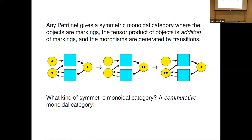In a symmetric monoidal category you can tensor things. Tensoring the objects is just adding markings. The plus sign in a chemical reaction network like C + 2H₂O — that plus is the symmetric monoidal structure, adding markings to get a new marking. But the kind of symmetric monoidal category we get here is much more strict — it's a commutative monoidal category, where all the commutativity, associativity, and unit laws are actual equations rather than isomorphisms.